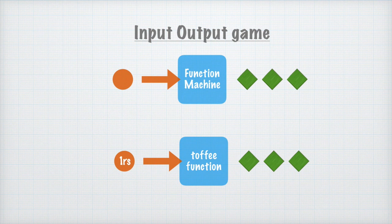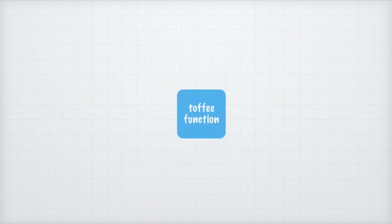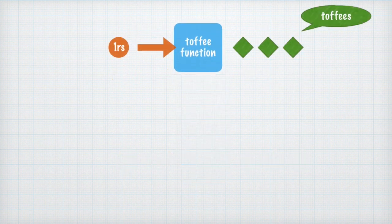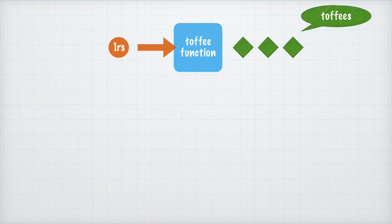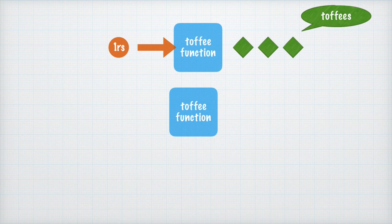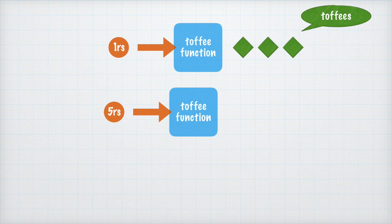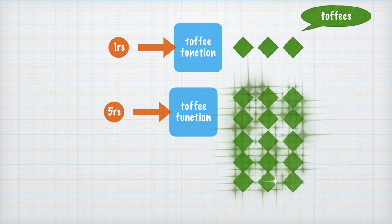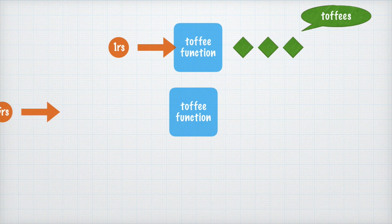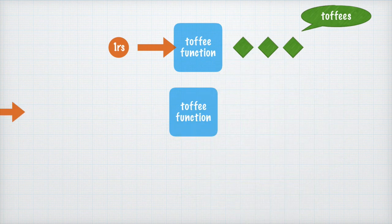If you put in one rupee you get three toffees, what will happen if you put five rupees in this toffee function? For most of you this calculation would be very easy—you've been buying toffees all your life. When you put one rupee you get three toffees, when you put five rupees you'll get 15 toffees. Most people will be able to solve it. There you have it—you were not even given the function, you were just given the input and output, and you took out the pattern and used it to deduce how many toffees you will get.